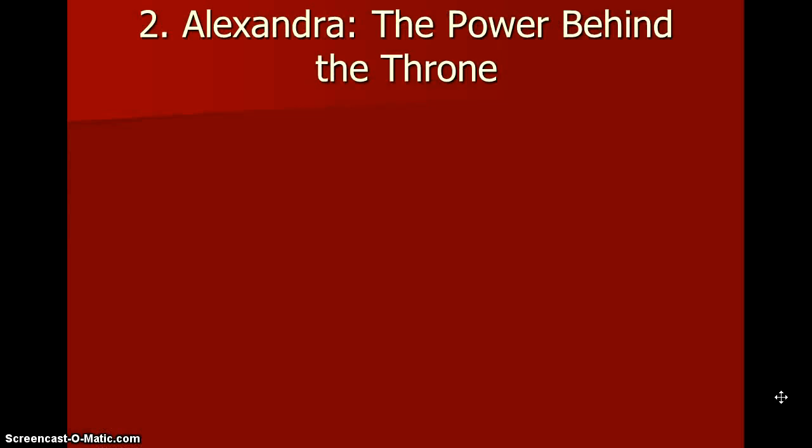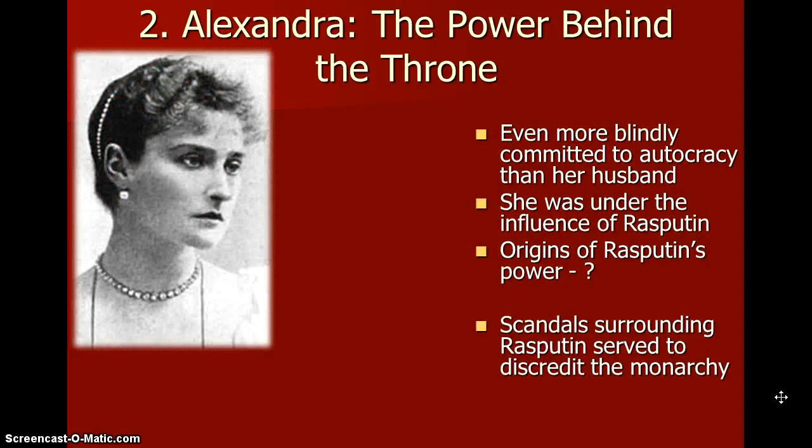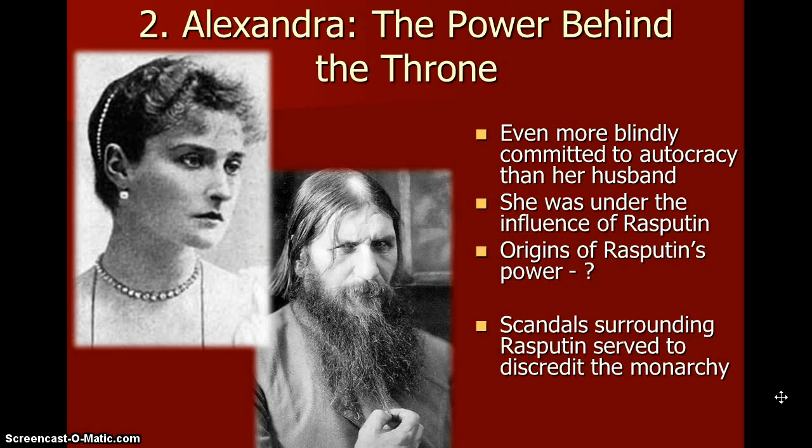Alexandra — the power behind the throne. Alexandra was the wife of the king. Here's a picture of her. She was even more blindly committed to autocracy than her husband. She was under the influence of Rasputin, who was this man. The origins of Rasputin's power are unknown. The scandal surrounding Rasputin served to discredit the monarchy.